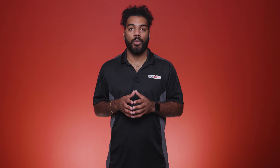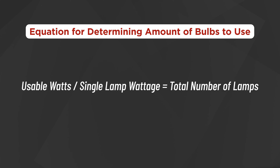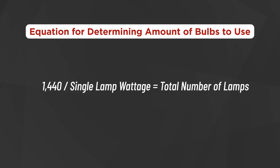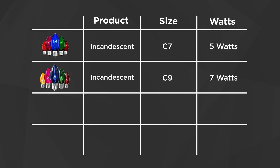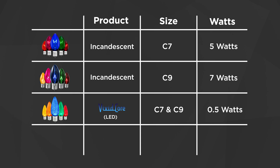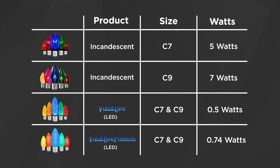Now that you have the usable watts, you can determine how many bulbs you can use with this second equation: usable watts divided by single lamp wattage equals the total number of lamps. Take 1,440 and divide it by the bulb wattage. The bulbs we offer at 1000Bulbs are incandescent C7s which use approximately 5 watts, incandescent C9s at approximately 7 watts, LED vivid core C7s and C9s which use approximately 0.5 watts, and LED vivid core premium C7s and C9s which use approximately 0.74 watts.